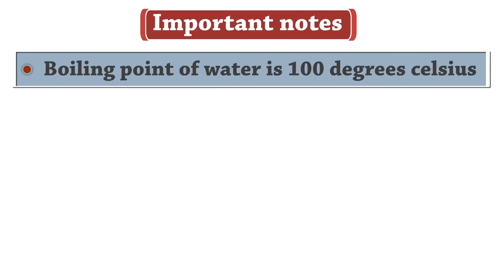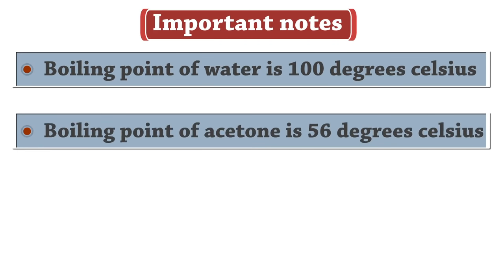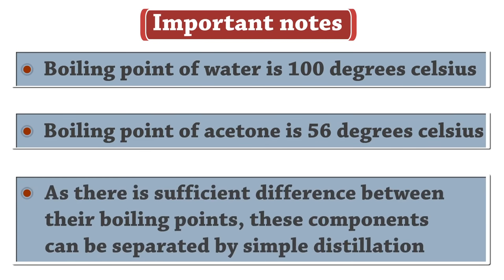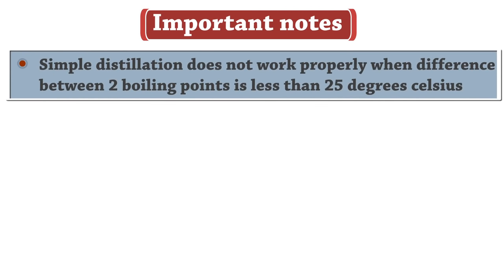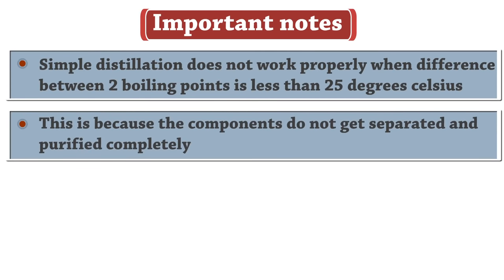Boiling point of water is 100 degrees Celsius. Boiling point of acetone is 56 degrees Celsius. As there is sufficient difference between their boiling points, these components can be separated by simple distillation. Simple distillation does not work properly when the difference between two boiling points is less than 25 degrees Celsius, because the components do not get separated and purified completely.